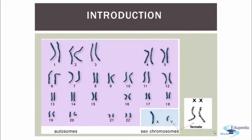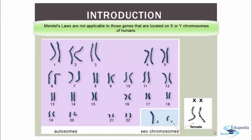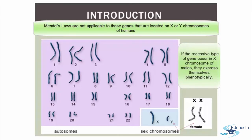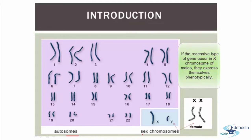Mendel's laws are not applicable to those genes which are located exclusively in X chromosome or Y chromosome. If a recessive type of gene occurs in the X chromosome of males, they express themselves phenotypically, because in such a case the Y chromosome contains no dominant allelomorph or gene to overcome the recessive gene of the X chromosome. This means that Mendel's laws are only applicable to the autosomes and not to the sex chromosomes.